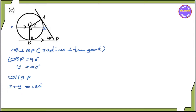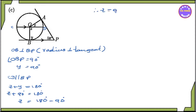Now we have y minus z plus 90 degrees equal to 180 degrees. So we can add that: 180 degrees minus 90 degrees. Therefore z is equal to 90 degrees. So you can see y is equal to y, and x is equal to x, so this is equal to 90 degrees.